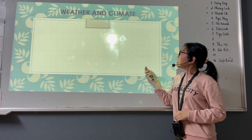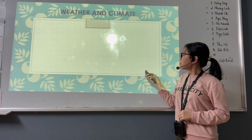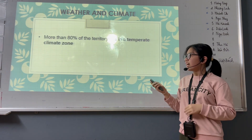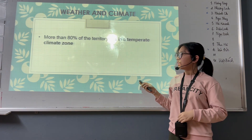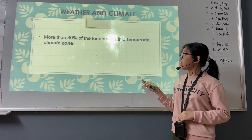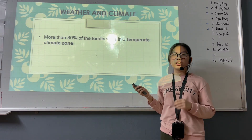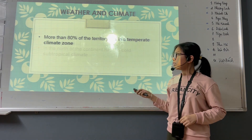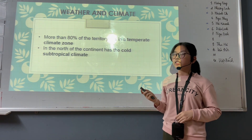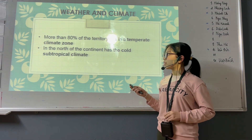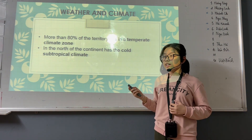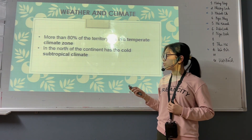Next is the weather and climate. In Russia, more than 80% of the territory lies in the temperate climate zone. But in the north, the continent has a cold subtropical climate zone — it is the coldest area of Russia.